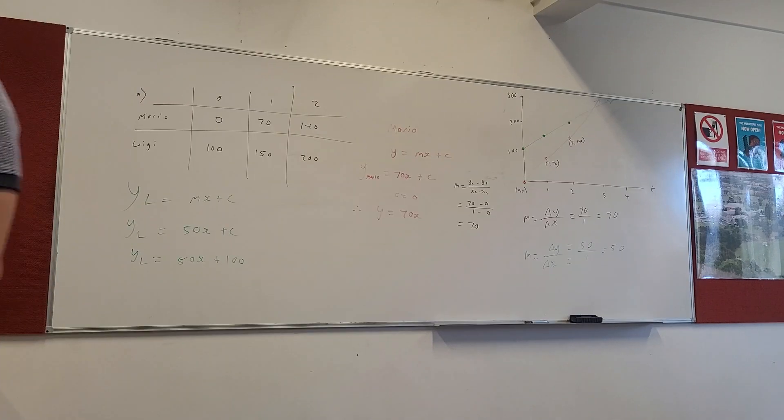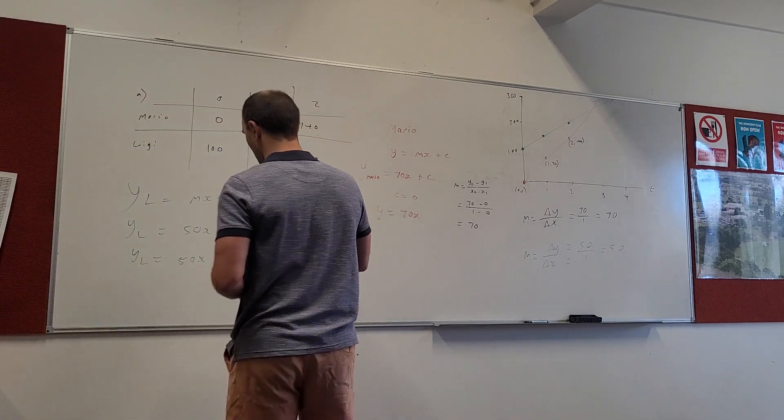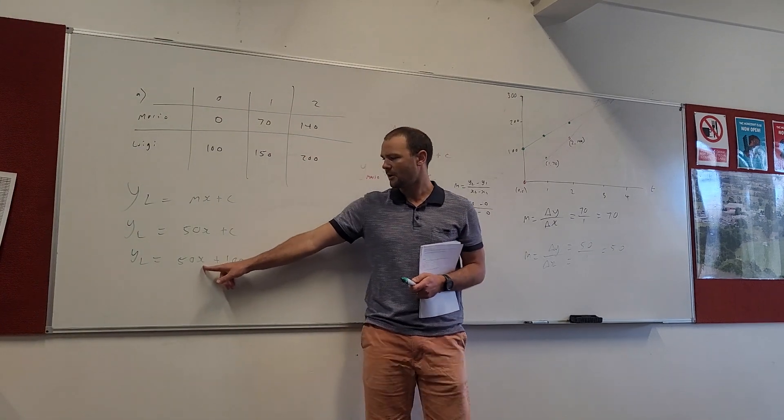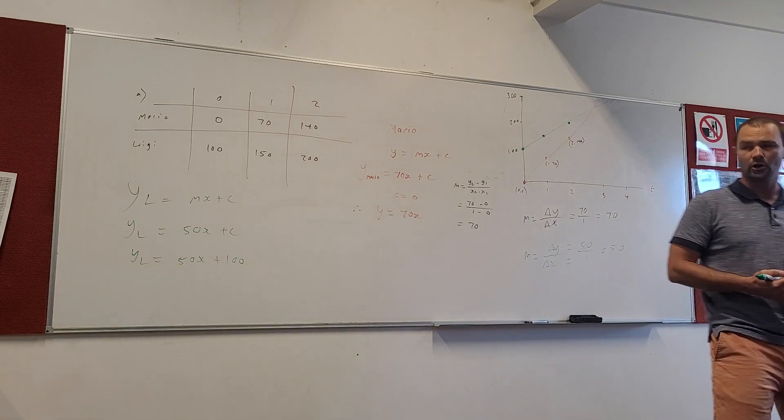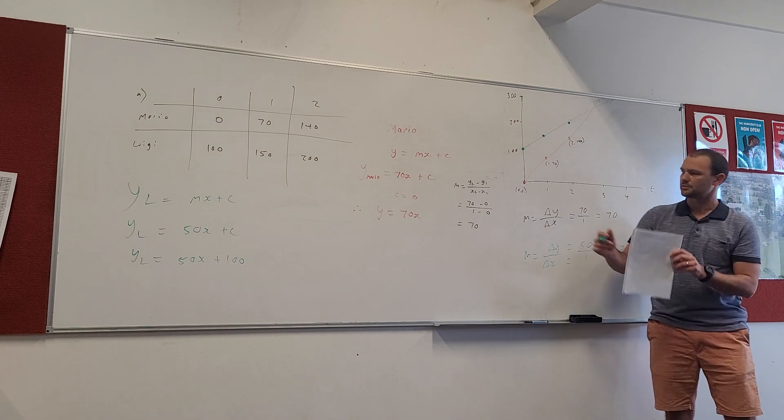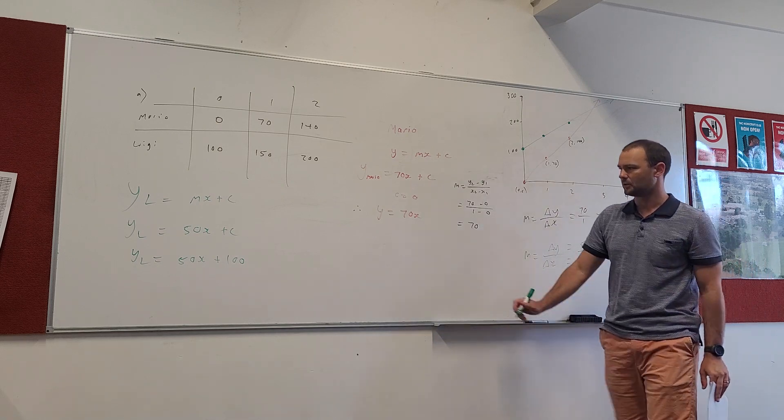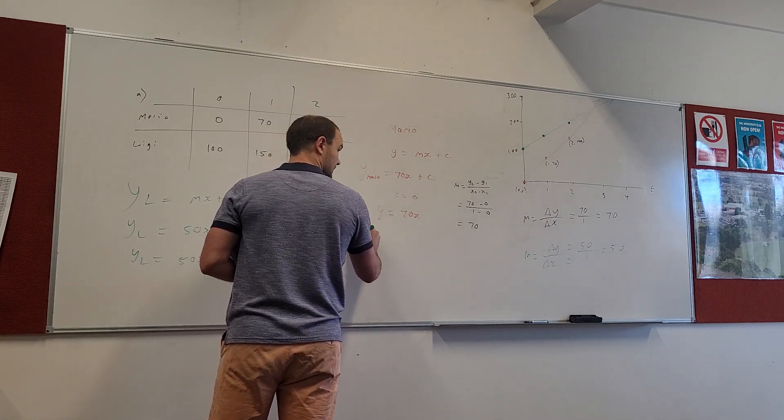We've got the equation of both plumbers. Alright. So, now you can work out, well, how much does it cost to employ Luigi for 10 hours? Alright. We put the 10 in there. 50 times 10, 500. Alright. Plus another $100. $600 to employ Luigi for 10 hours of work. Okay. So, what's the next part to do? Which of the equations is directly proportional? Okay. So, right at the top, the second dot point. The equation is said to be in direct proportion if it goes through 00. Which one goes through 00? Mario. Mario. Very good. Alright. So, we can answer that. That's part C. Mario is in direct proportion.